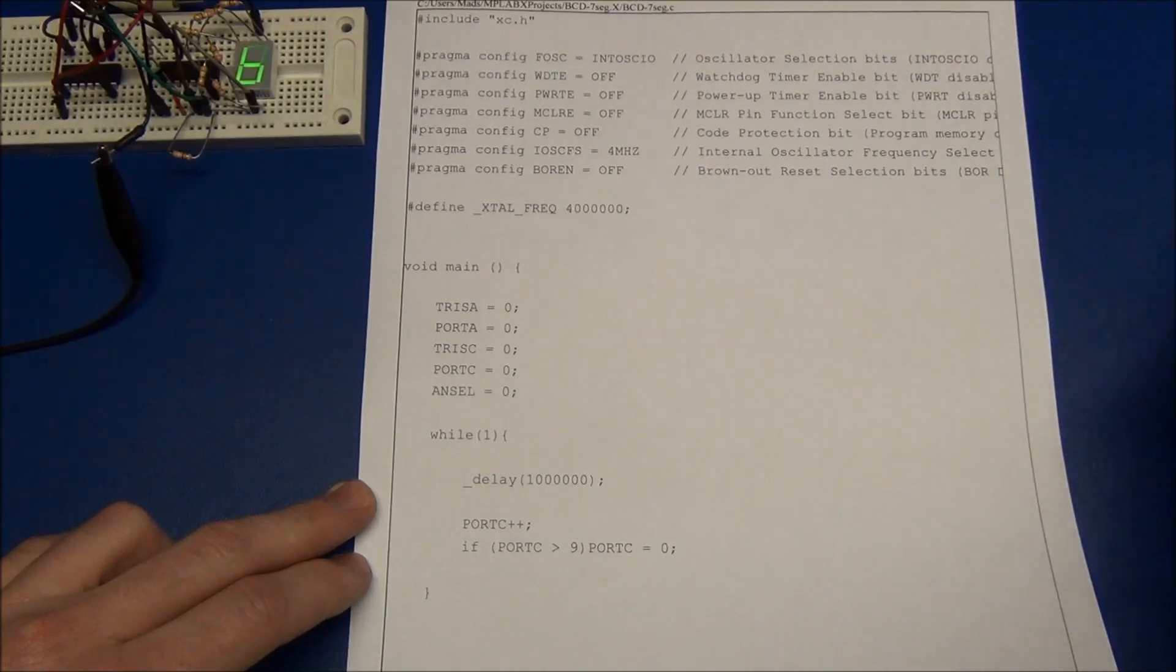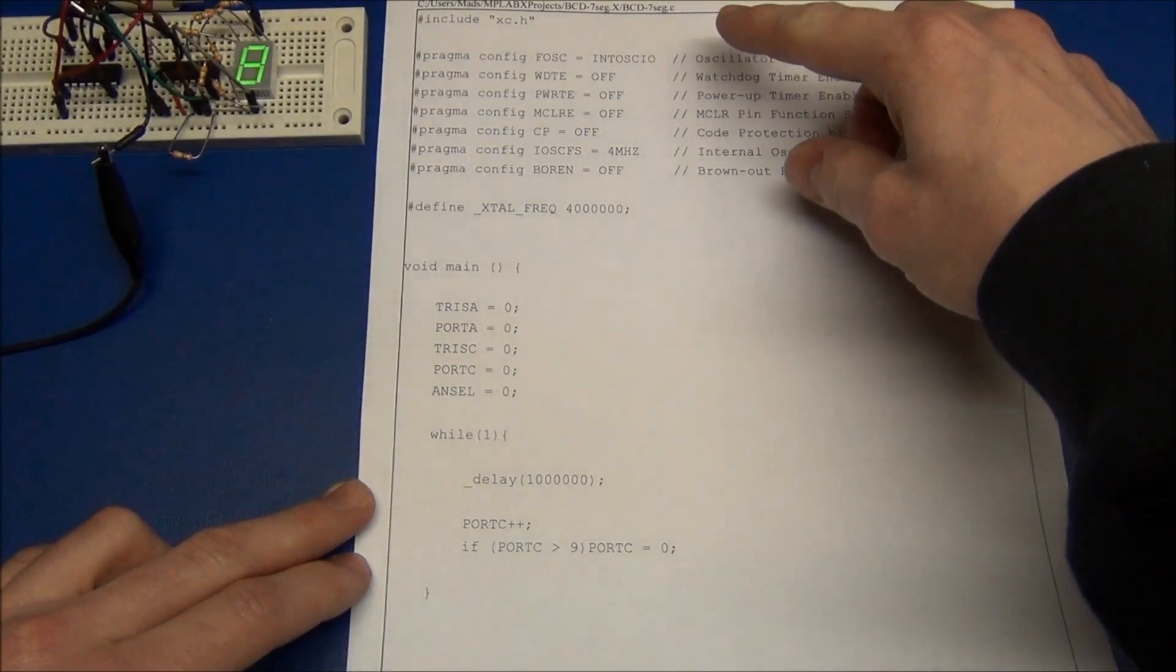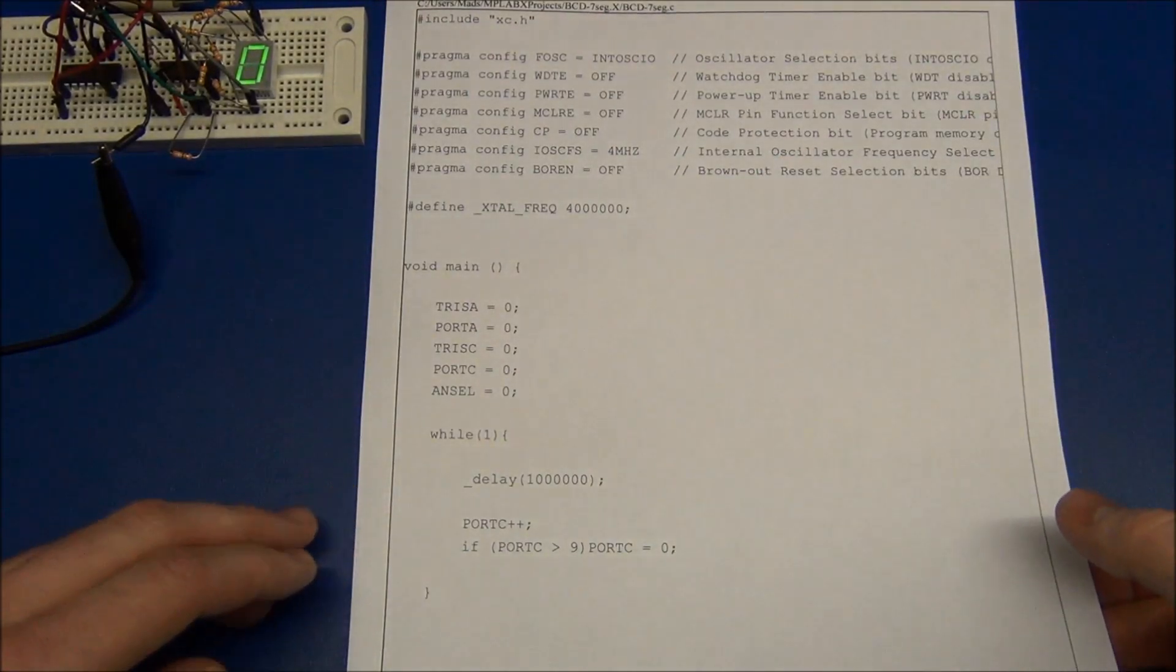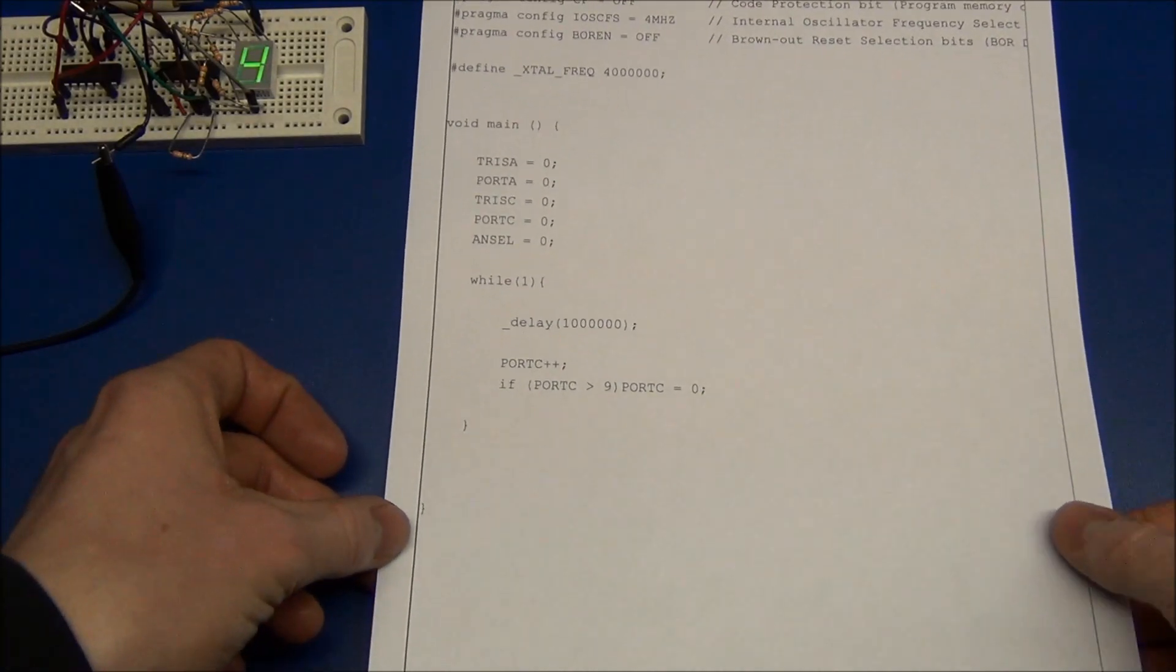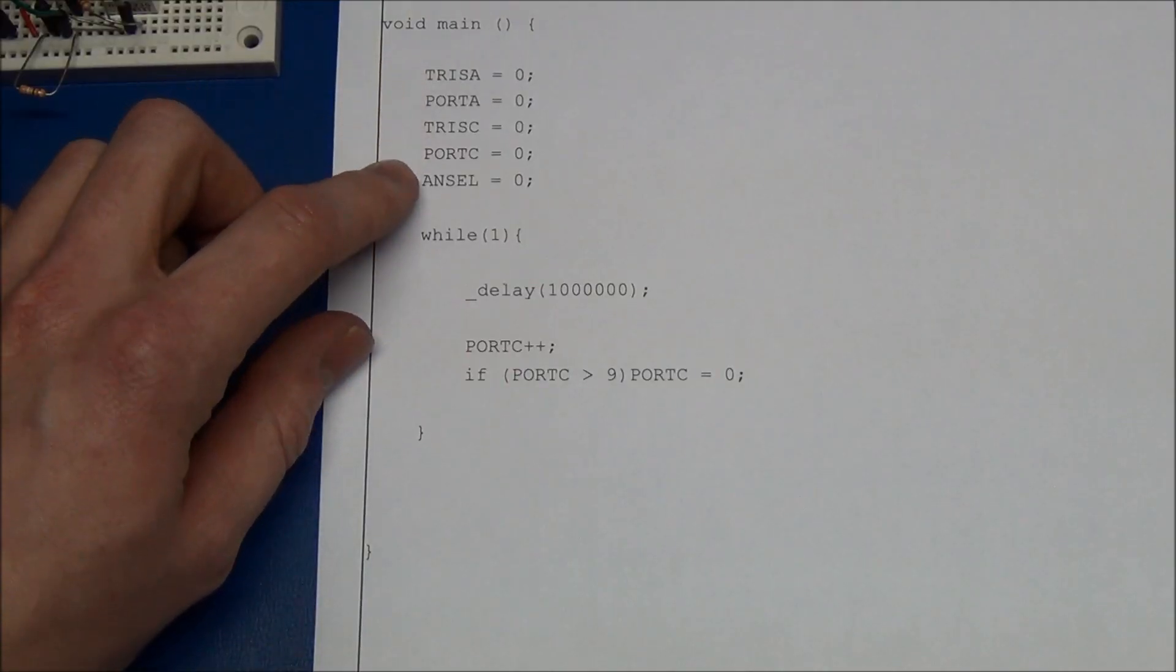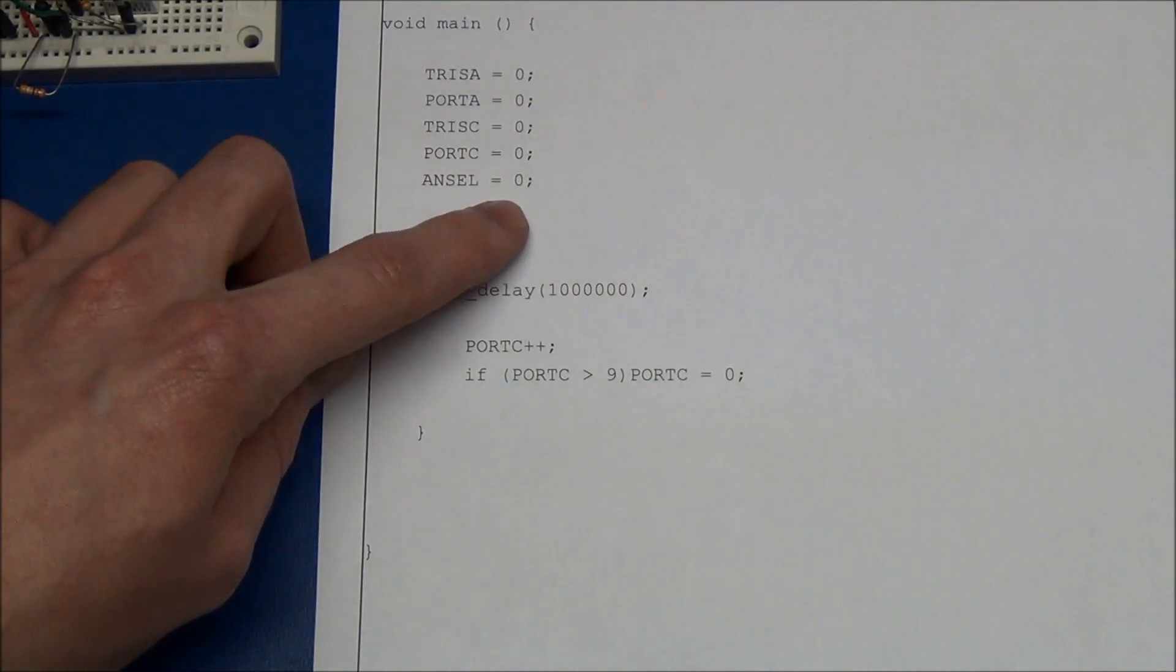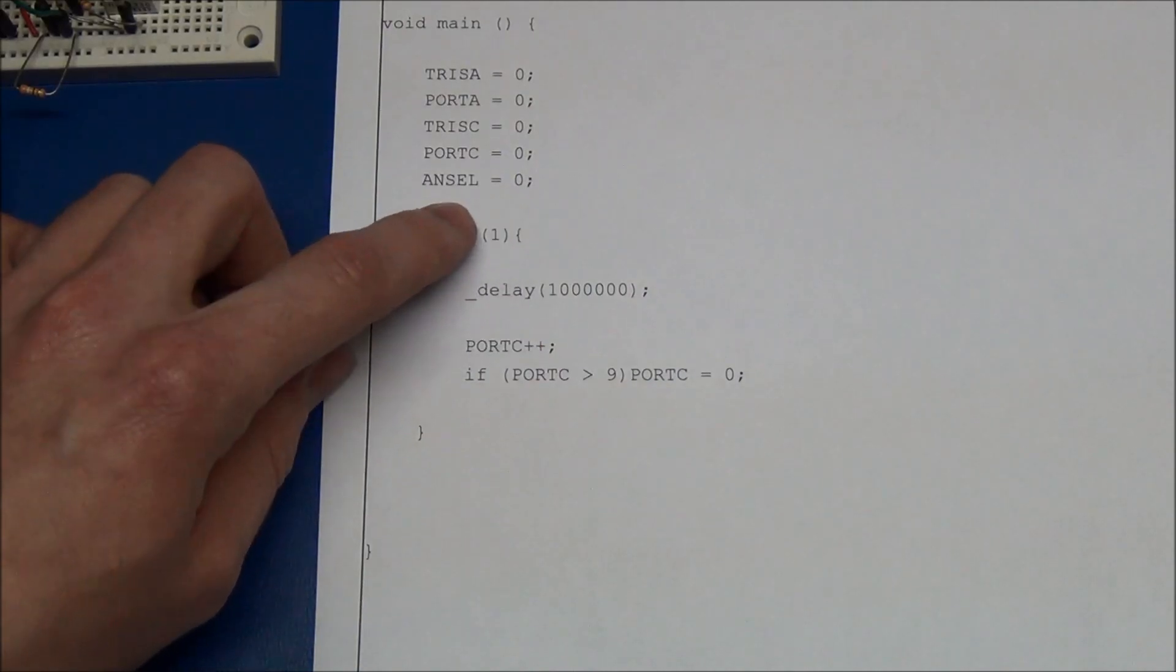So if we take a look at the code here, this first part on the top is not important, that is just the configuration bits. This is just setting all of the pins to outputs, setting the state to low, and making sure that the pins are in a digital state.